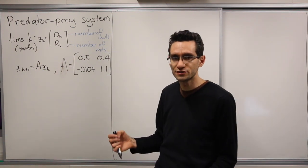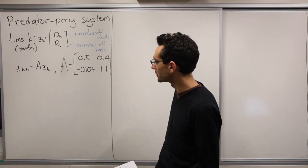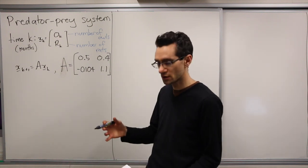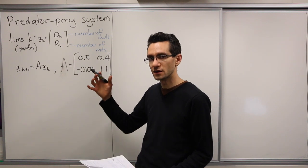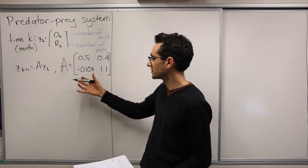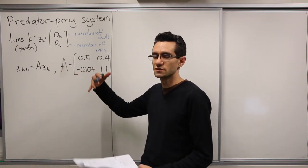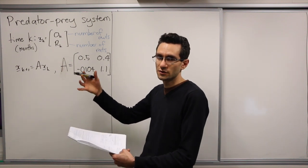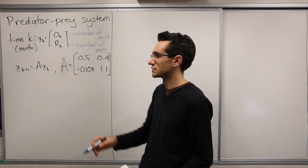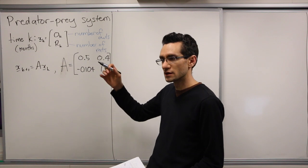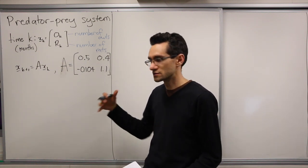So we want to say what's the long-term behavior of this system. What we can do, as in lectures, is we want to find the eigenvectors, the eigenvalues of A, and see whether they're greater than or equal to 1 or smaller than 1 in magnitude. Then we can see what happens to the eigenvectors as time progresses.